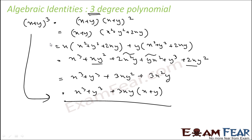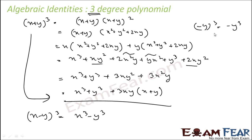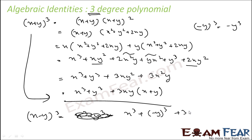So the way we expand (x + y)³ is: x³ + y³ + 3xy(x + y). Similarly, if you want to expand (x − y)³, just replace y with −y. So (−y)³ is −y³, and putting it all in: x³ + (−y)³ + 3 × x × (−y) × (x + (−y)).